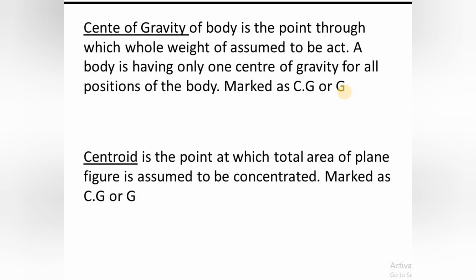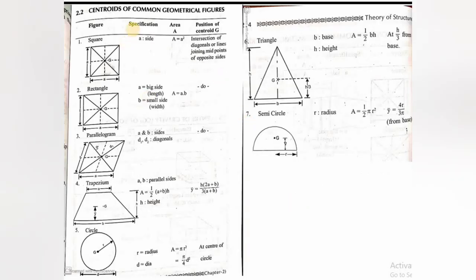The centroid is a point at which the total area of a plane figure is assumed to be concentrated, and it is also marked as CG or G. Both terms represent the same concept, but the center of gravity is defined for a 3D body whereas the centroid is defined for a plane figure. The total area is assumed to be concentrated at the centroid, and the total weight is assumed to be concentrated at the center of gravity.